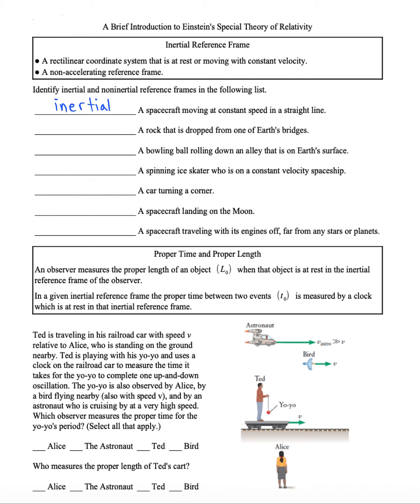How about a rock that's dropped from one of Earth's bridges? Well, Earth itself is not accelerating, but the rock is. So I'm going to say non-inertial. We're looking for constant velocity situations here.